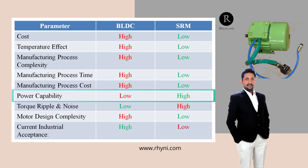High power applications: The temperature effect also restricts use of BLDC motors for high power applications. The rotor of the SRM does not use a magnet and so is more preferable for high power applications. The requirement of a more powerful magnet for high power BLDC creates issues of electromagnetic interference to nearby sensitive electronics devices. Thus BLDC motors are generally restricted to lower power ratings — below 20 kilowatts — except when taking special care in selecting a magnetic material and design.